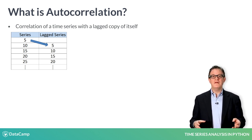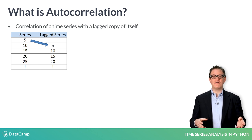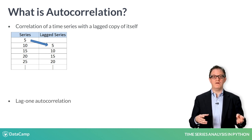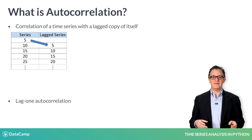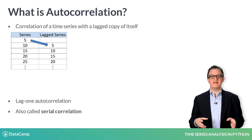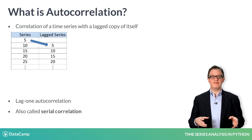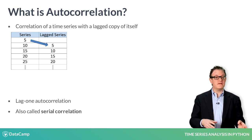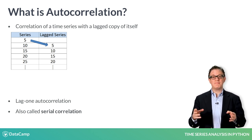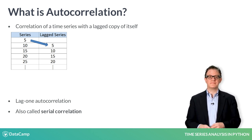Often, when we refer to a series autocorrelation, we mean the lag-one autocorrelation. So when using daily data, for example, the autocorrelation would be the correlation of the series with the same series lagged by one day.